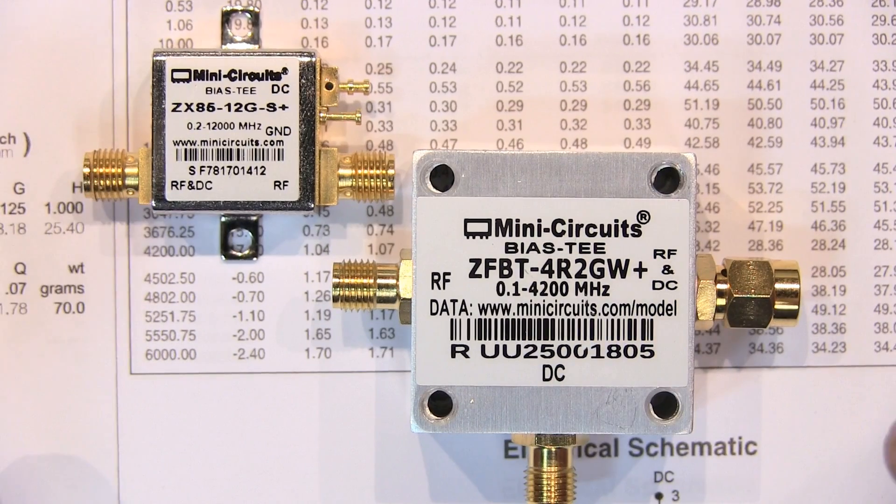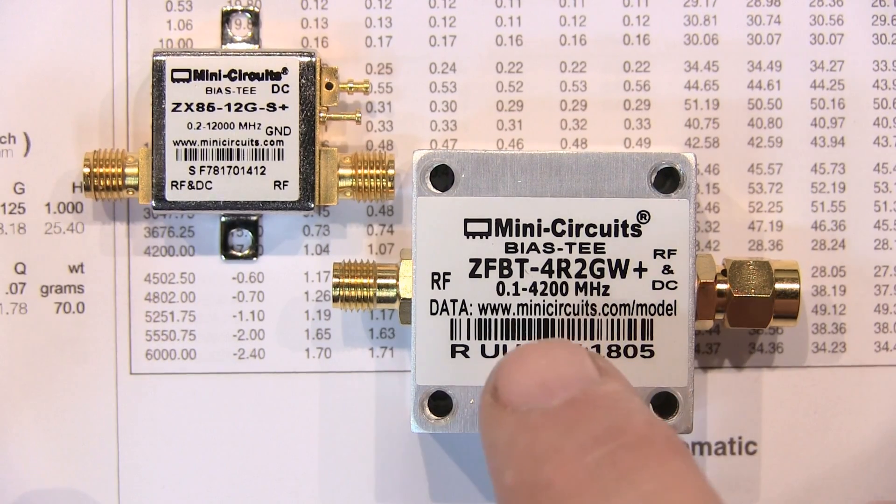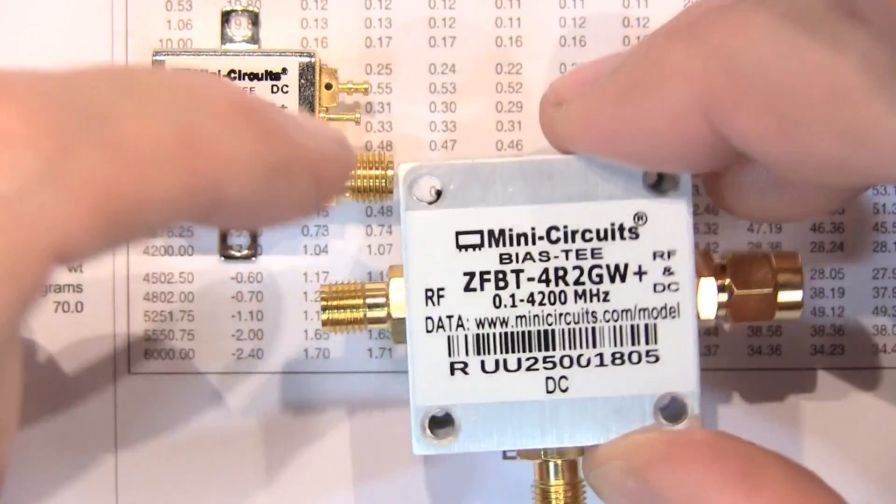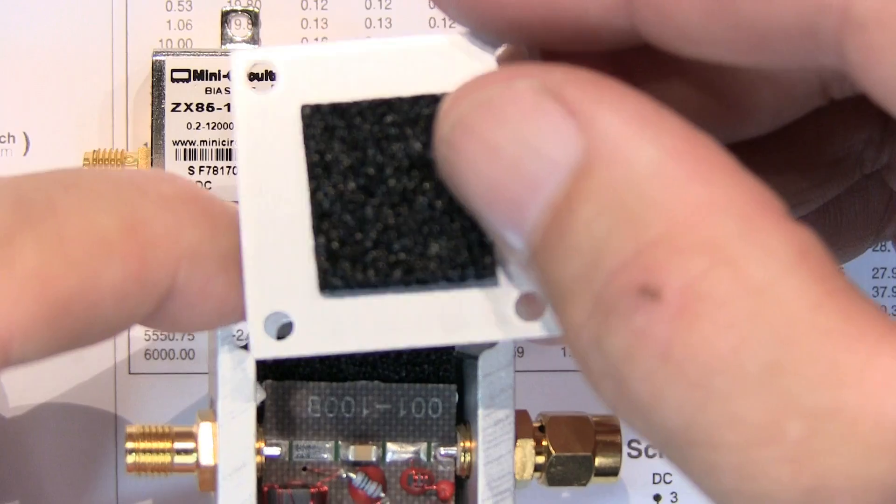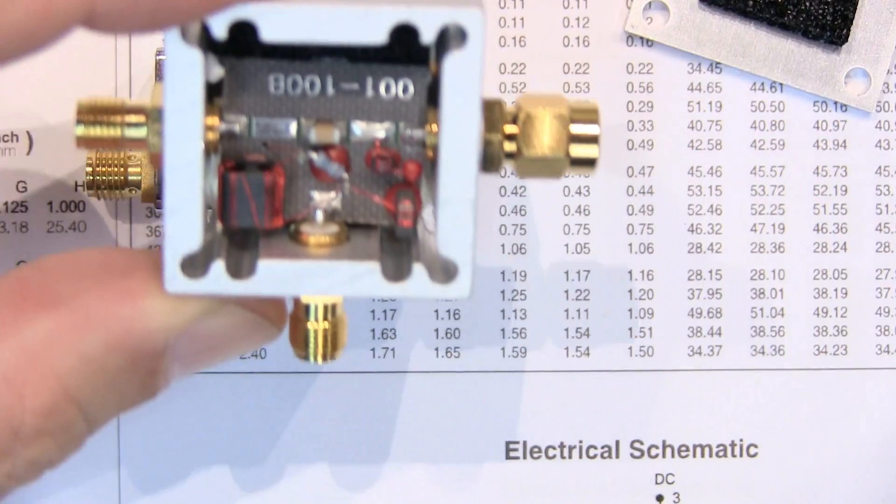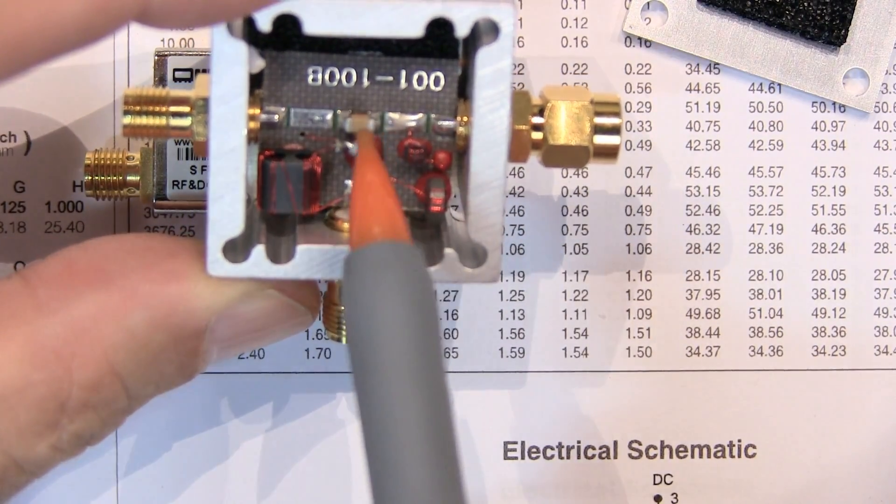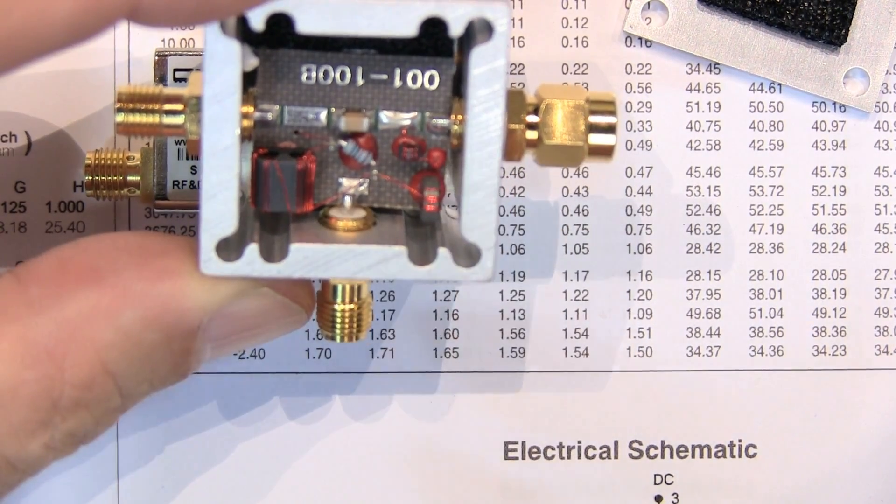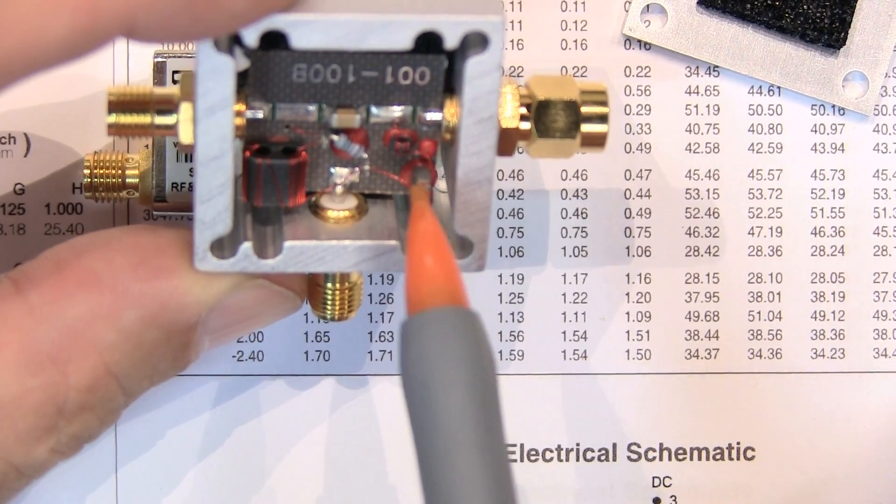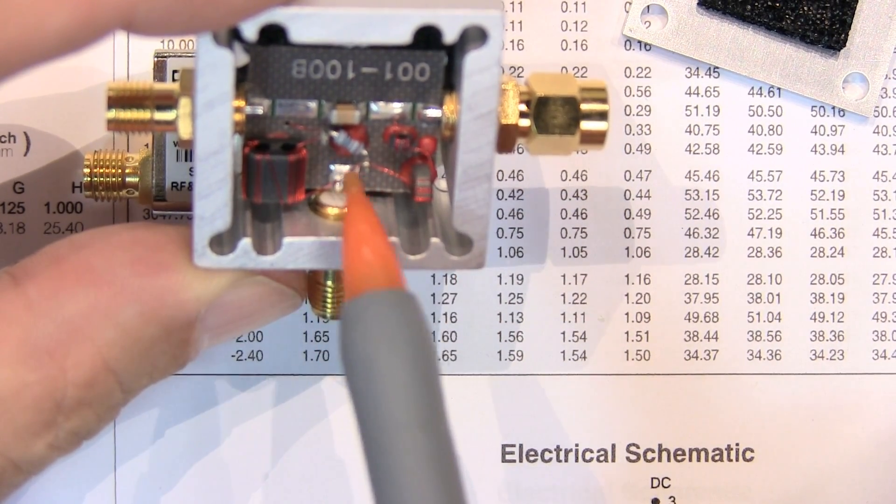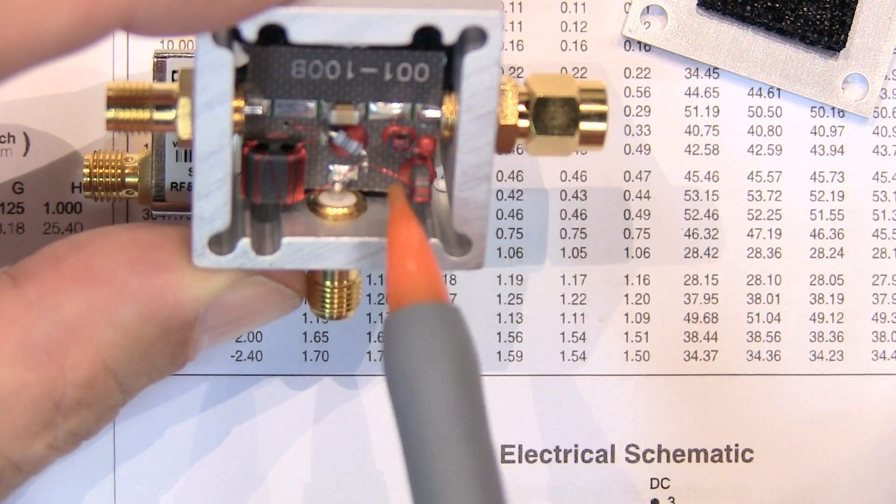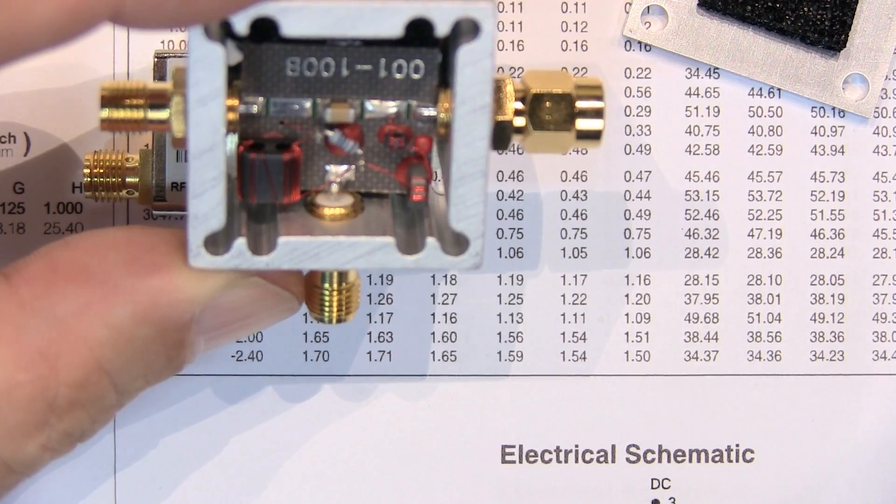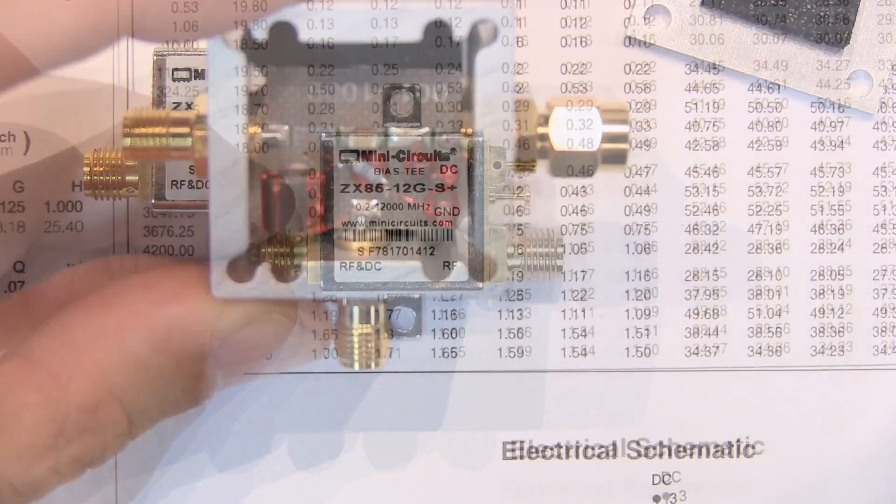Let's take a quick look at how these two particular bias tees are designed. This one is rated from 100 kHz to 4.2 GHz. If we pull the cover off of this, we can see a little bit of RF absorbing material attached to the lid. And if we look inside, here's our DC blocking cap, our series cap going from the RF to the RF plus DC output, but we could also see three separate inductors as well as a de-Qing resistor as part of an RL network here to provide the DC path to give us good broadband DC blocking over that operating frequency range.